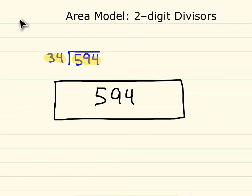Our left side here, our width is going to be 34, and our length will be our quotient.